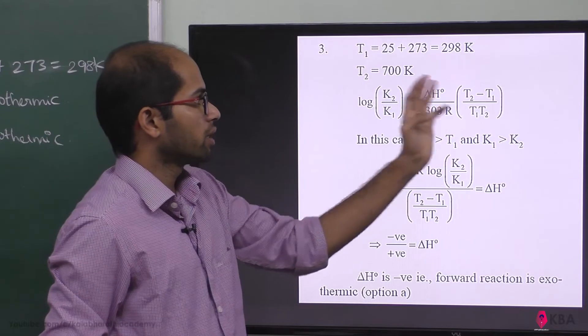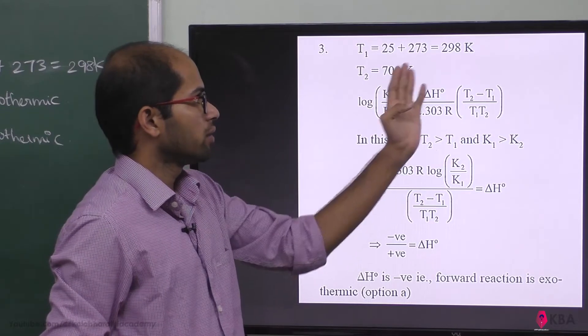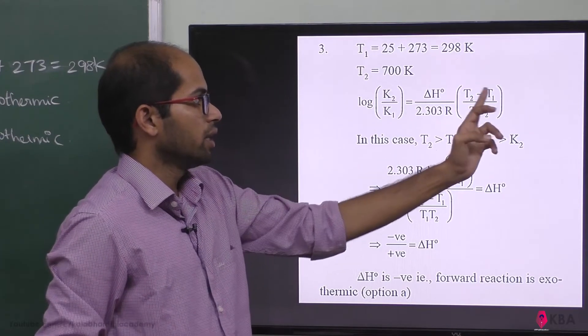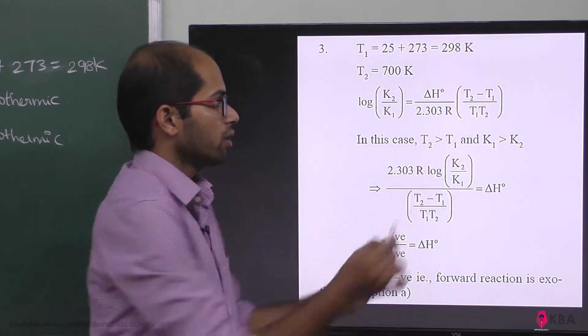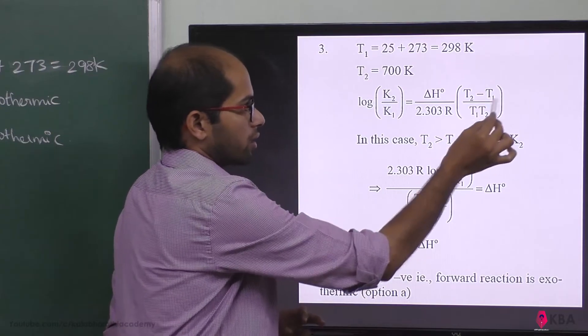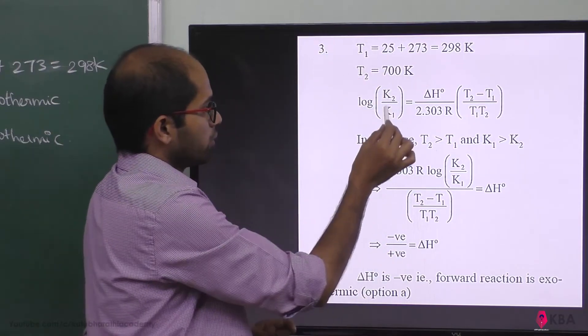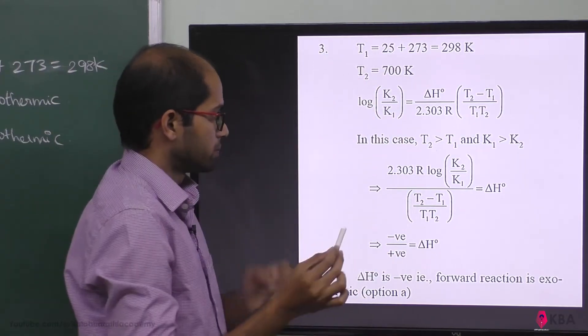The denominator term (T2 minus T1) divided by (T1 times T2) is a positive value. We also need to evaluate K2 divided by K1 for the numerator.